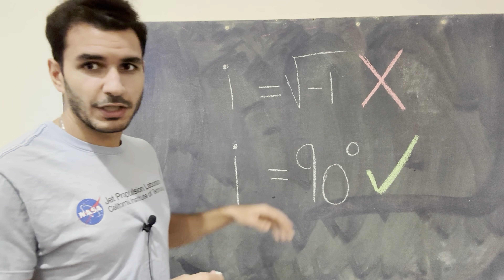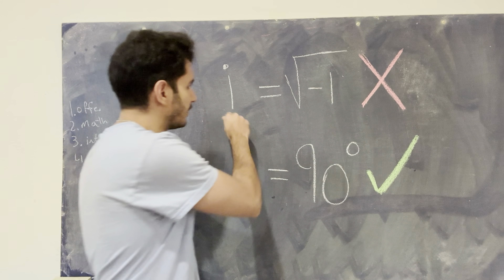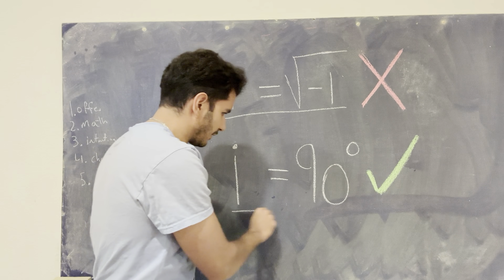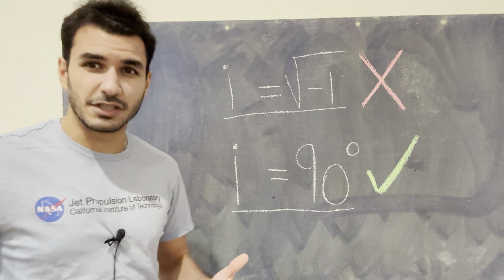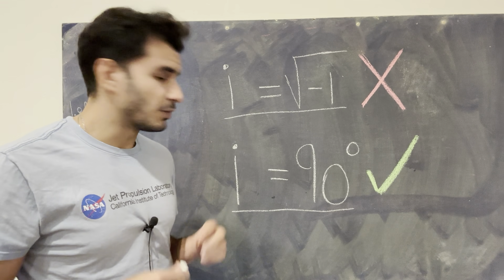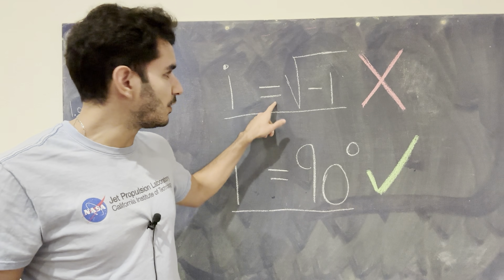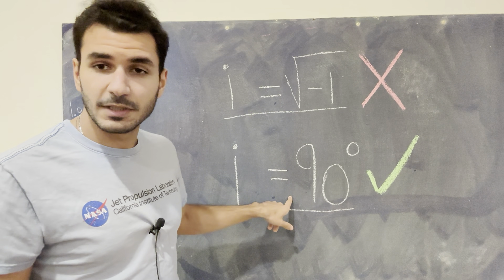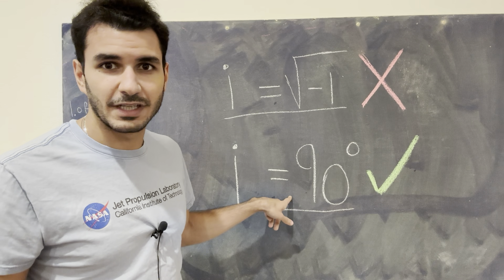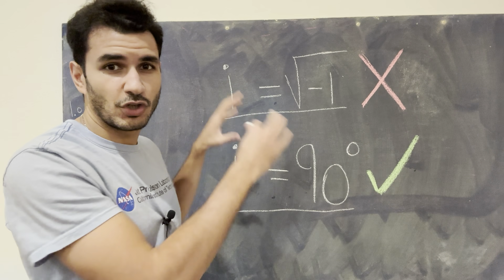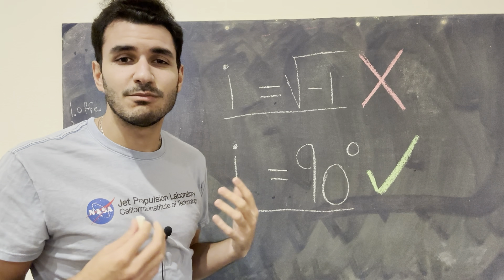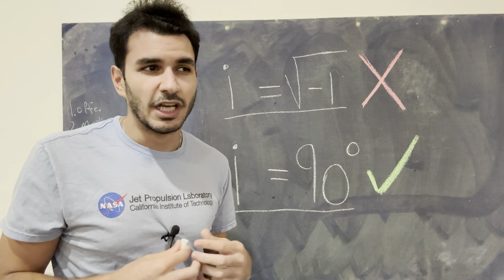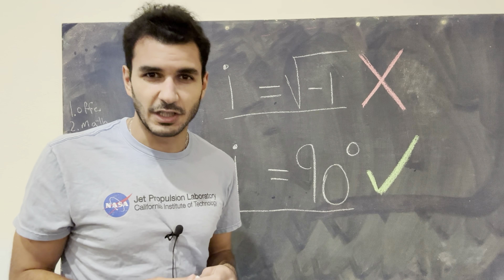What I have over here is the way i is usually thought of, which is i equals the square root of negative one. And then I have something else over here that says i equals 90 degrees. For the rest of this video, I'm going to first go over what it means and how we came to this. And then I'm going to show you what i equals 90 degrees means. I'm going to draw a little graph that's going to make things a lot more intuitive, so you can finally visually understand what imaginary numbers are, and going forward, think of them a little bit differently.